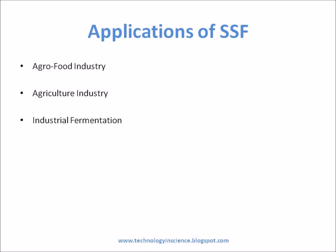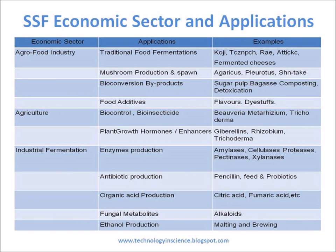Applications of Solid State Fermentation — Agro Food Industry: Traditional food fermentations such as Koji, fermented cheeses, mushroom production and spawn production (Agaricus, Pleurotus), bioconversion of by-products such as sugar pulp and bagasse, composting, detoxification, food additives, flavors, and dye stuffs.